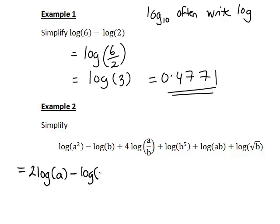Log b, can't do much with that. Next one, 4, so I'll put that out the front, log a divided by b. That was the second law, that log of a divided by b is the same as log a minus log b. So that's multiplied by the 4.